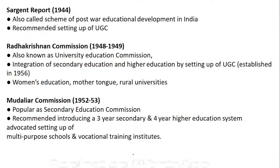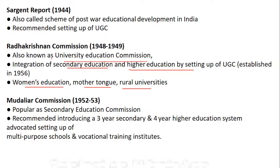Sargent Report, also called the scheme of post-war educational development in India, was the report which recommended the setting up of UGC — University Grants Commission. Then we have Radhakrishnan Commission, also known as the University Education Commission, which integrated secondary and higher education and established UGC in 1956. It also gave importance to mother tongue education and rural universities.